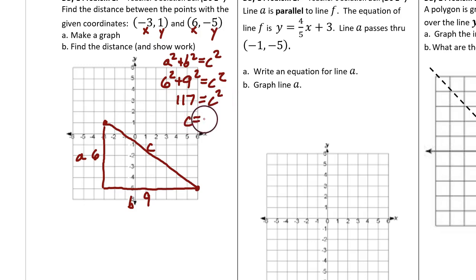Now figure out the square root of 117. The answer is 10.8. It is 10.8 units between this dot and this dot.